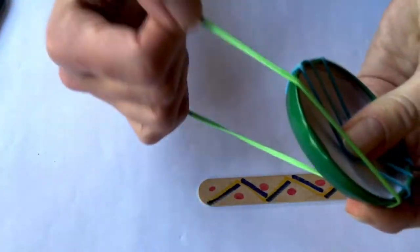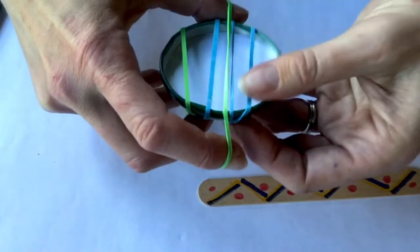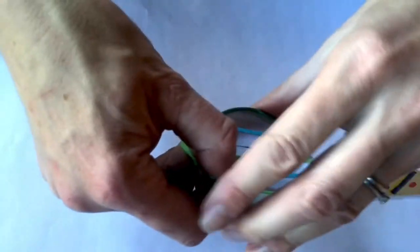Then put your second one on and twist and turn again. Again, three times with this because it's quite a large elastic band.